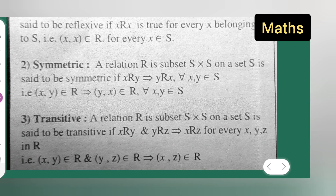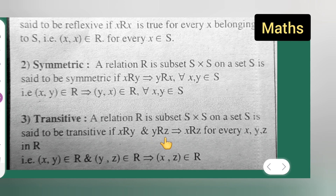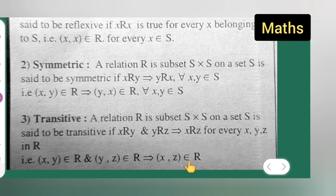For a relation to be transitive: a relation R ⊆ S×S on a set S is said to be transitive if X is related to Y and Y is related to Z implies X is related to Z, for every X, Y, Z belonging to R. That is, (x,y) ∈ R and (y,z) ∈ R implies (x,z) ∈ R.